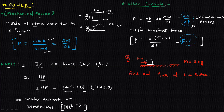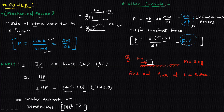There is one more formula for power. Since P = dW/dt and work W can be written as F⃗ · s⃗, we get P = F⃗ · ds/dt. Because force is constant, F⃗ comes out of the differentiation, and ds/dt is velocity v⃗. Therefore, Power = F⃗ · v⃗, or simply force multiplied by velocity.